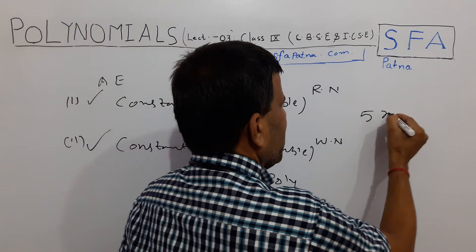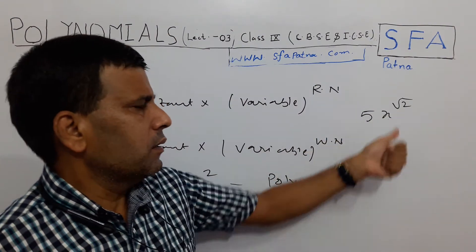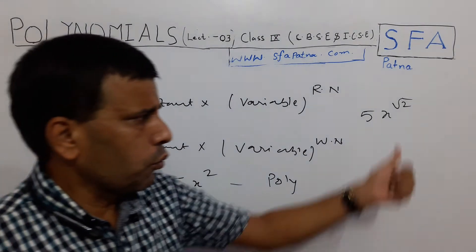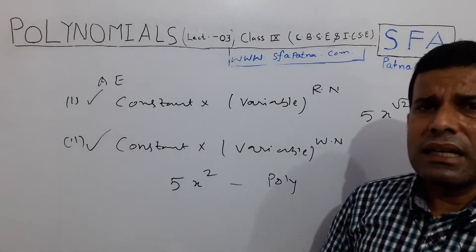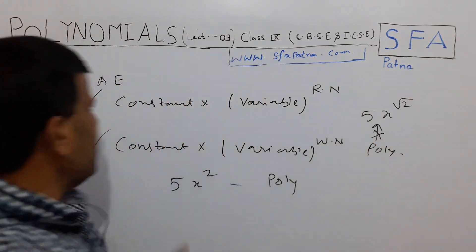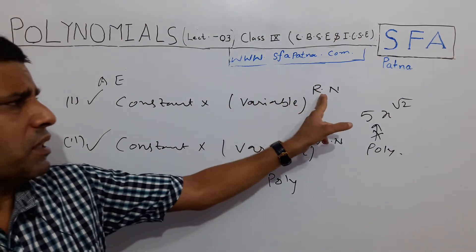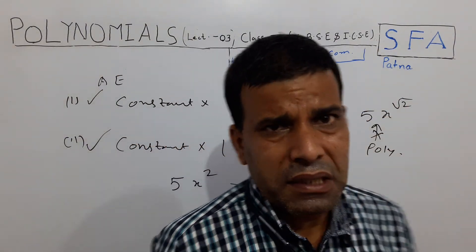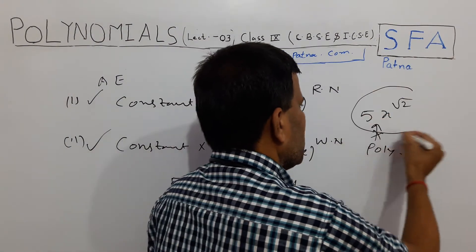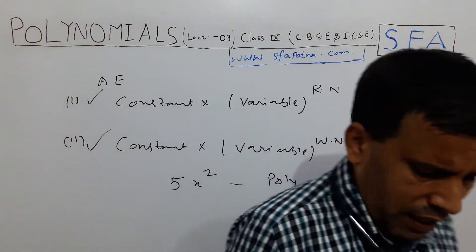Now if I write 5x^(root 2) — here 5 is your constant, x is your variable, and the power of x is root 2. Is root 2 a whole number? No. Root 2 is an irrational number, not a rational number. Rational numbers can be expressed as p/q, so root 2 is not a rational number. Therefore this expression is neither an algebraic expression nor a polynomial expression.